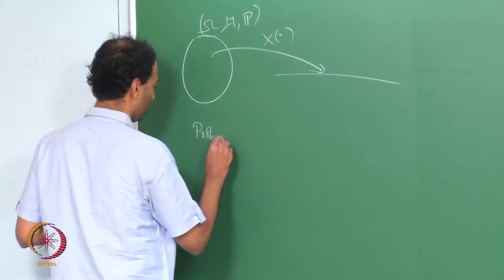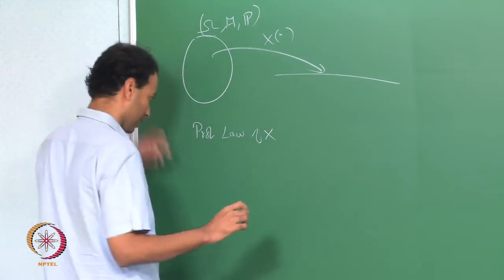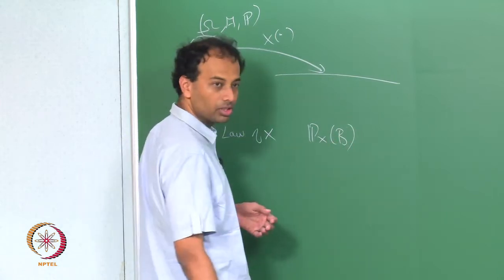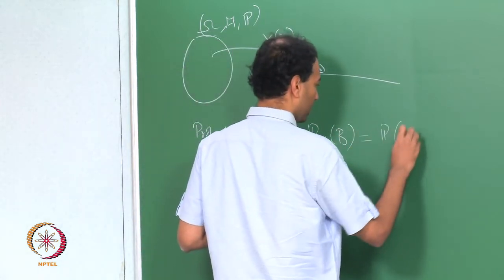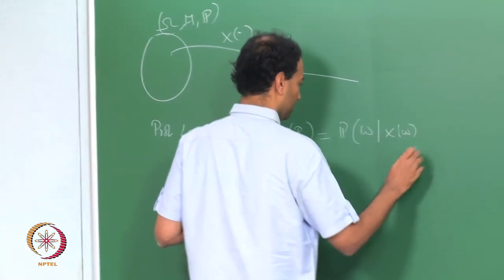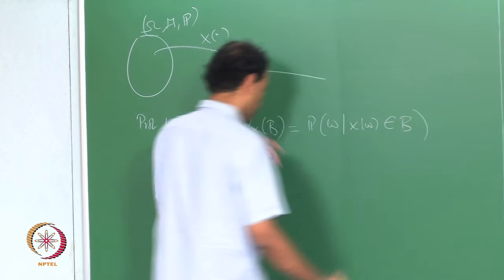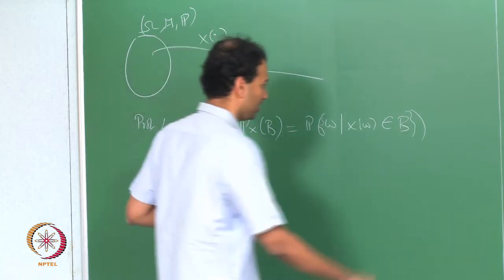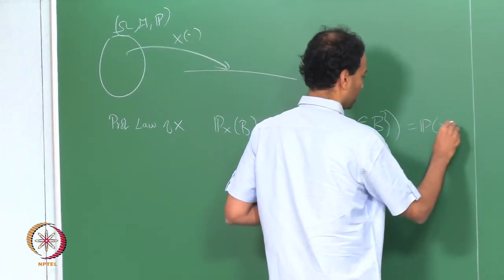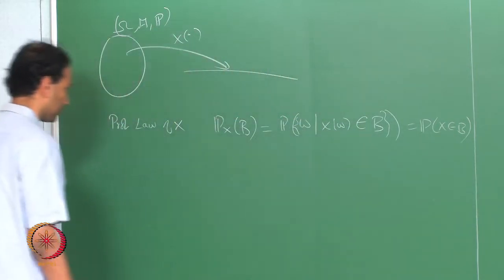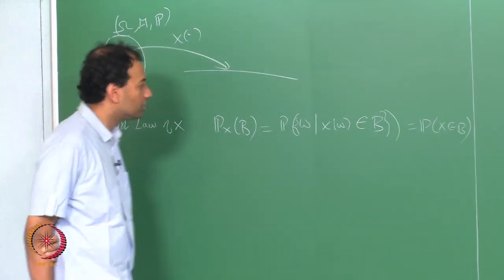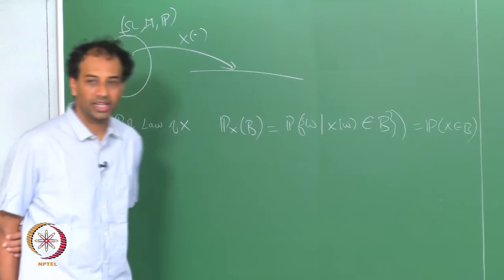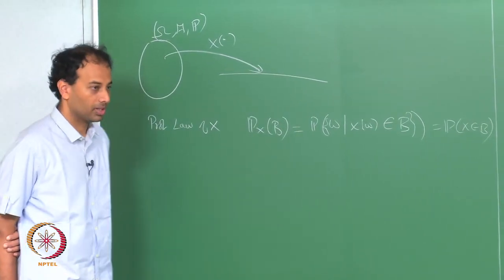We also define the probability law of X as: P_X of B for any Borel set B is defined as the probability that X(omega) belongs to B. I will abuse notation and write this as P(X in B). So the probability law gives the probability that the random variable takes values in a specific Borel set B, and it is defined for all Borel sets.